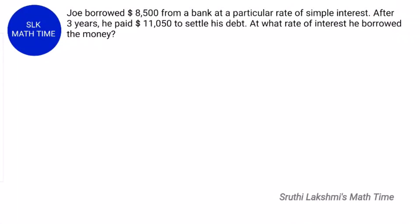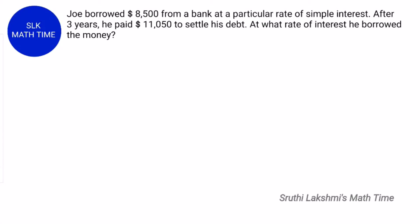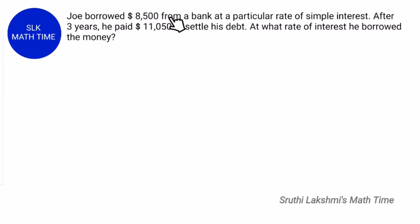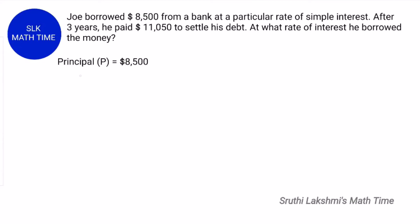Let's see another example. Joe borrowed $8500 from a bank at a particular rate of simple interest. After the end of three years he paid $11050 to settle his debt. At what rate of interest did he borrow the money? Joe borrowed $8500 from a bank, which is the principal. So the principal P is $8500.